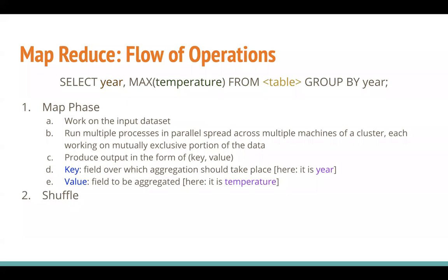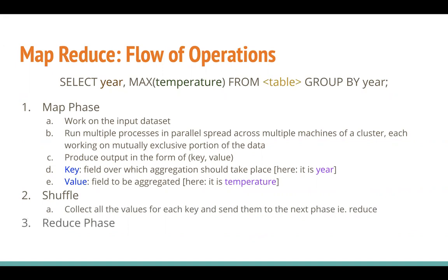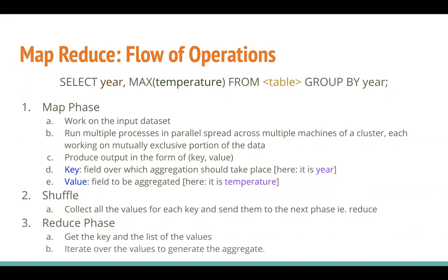There is a shuffle phase. Think of a situation where you have multiple mappers running - each mapper outputs key and value. If you have to aggregate the value, you need to collect all the values across the output of all mappers which have the same key. To get the maximum temperature for the year, you need to collect all the temperature values for a given year, and these can be in the output of different mappers. The shuffle phase collects all the values for each key and sends it to the reduce phase. In the reduce phase, you have a key and a list of values, and you can operate on that list to derive any statistics - mean, count, standard deviation, max, min, or average.